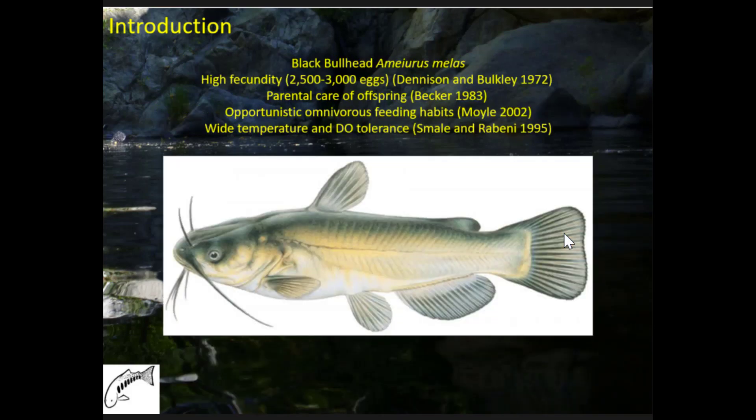Specifically, I wanted to talk about the black bullhead. This species has life history characteristics which facilitate expansion outside of its native range: high fecundity, parental care of offspring, opportunistic feeding habits, and wide temperature tolerance as well as low dissolved oxygen tolerance.